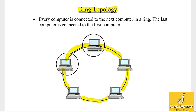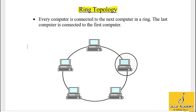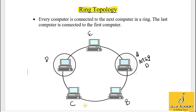Now let's discuss the working of ring topology. If computer A wants to communicate with computer D, A will send its message along with the address of the destination computer to computer B. As the destination address does not match B, computer B will forward the message to computer C. Since this message is not for computer C, it will send it to the next computer, which is computer D. Here the destination address is matched, so computer D will keep the message and communication will stop here.